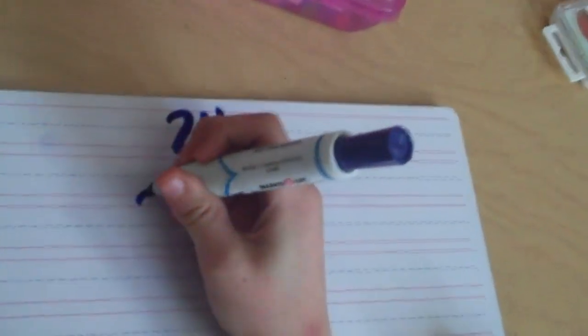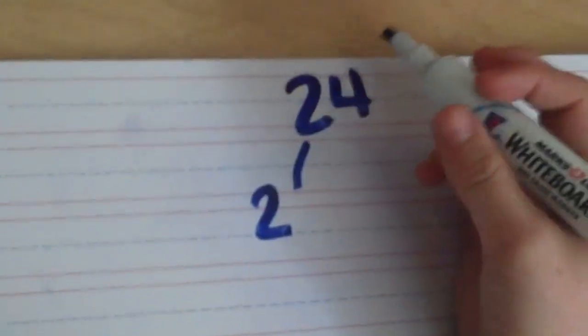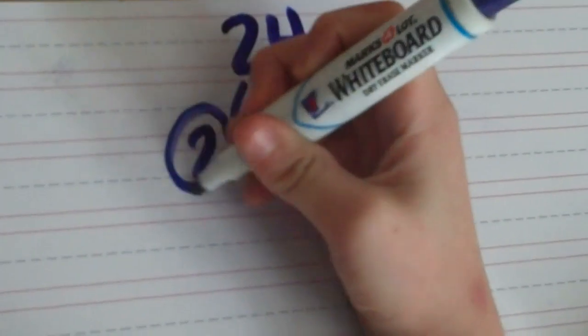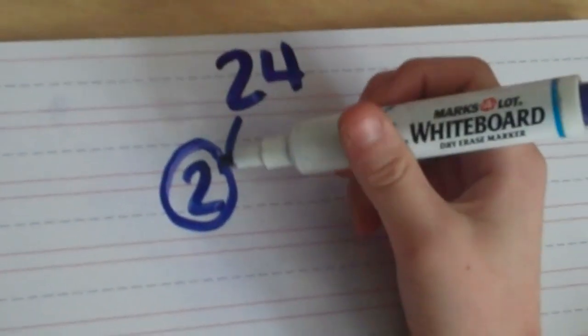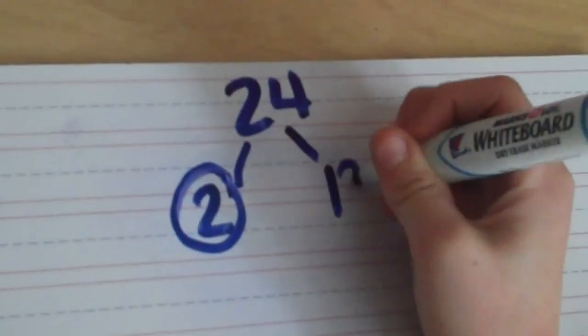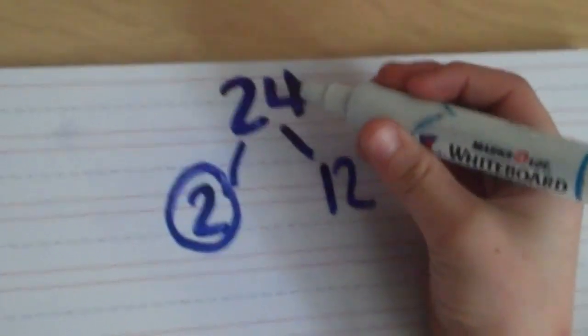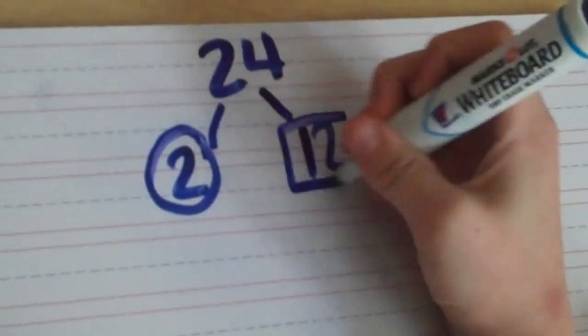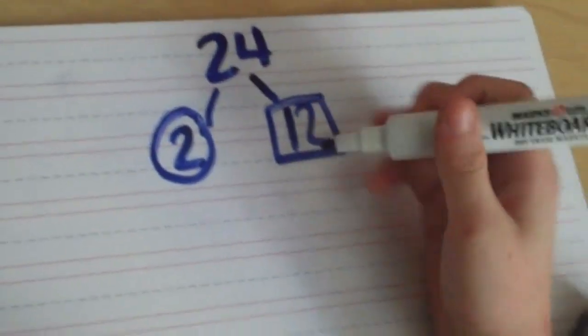I'm going to show you how to do the prime factorization of 24. I put the number 2 down because 2 is divisible by 24. Put a circle around 2 because 2 is a prime number. I put the number 12 down because 12 times 2 equals 24. Put a box around 12 because 12 is a composite number.